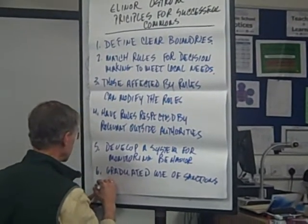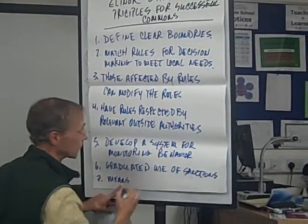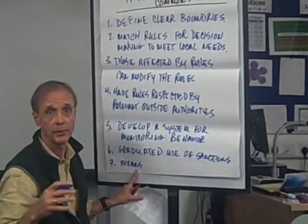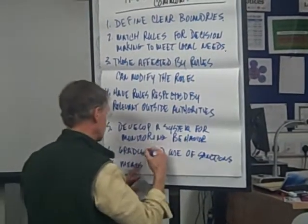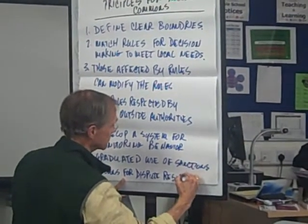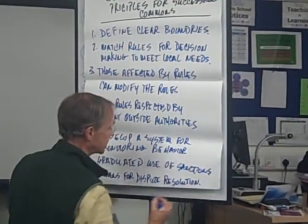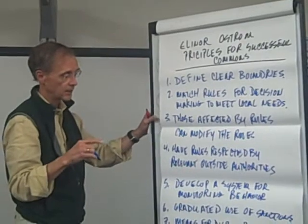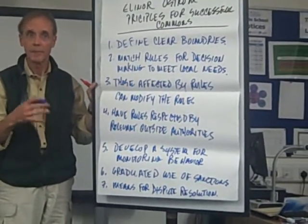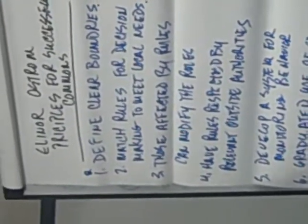Principle seven is that there are means for dispute resolution that are accessible to people. If none of us have a lot of money and we have disputes, there must be something affordable in terms of dispute resolution — people managing commons in India at a subsistence level are not going to hire attorneys. The eighth principle is to interlink nested tiers of commons.